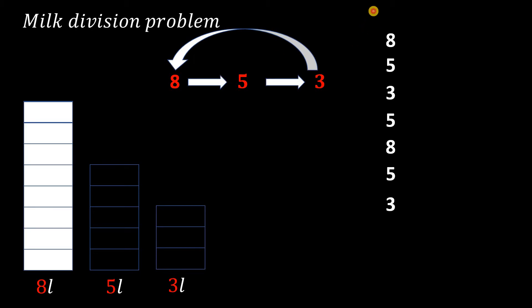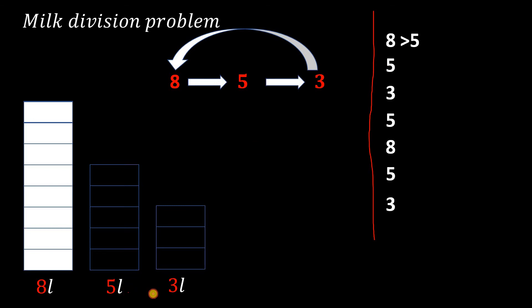Now let's see which jar is on the right side of the eight-liter jar — it's the five-liter jar. So in the first step we pour from the eight-liter jar into the five-liter jar. Next, near the five-liter jar is the three-liter jar on its right side, so we pour from the five-liter jar into the three-liter jar. Similarly, the three-liter jar is poured into the eight-liter jar, and this gives us our result.